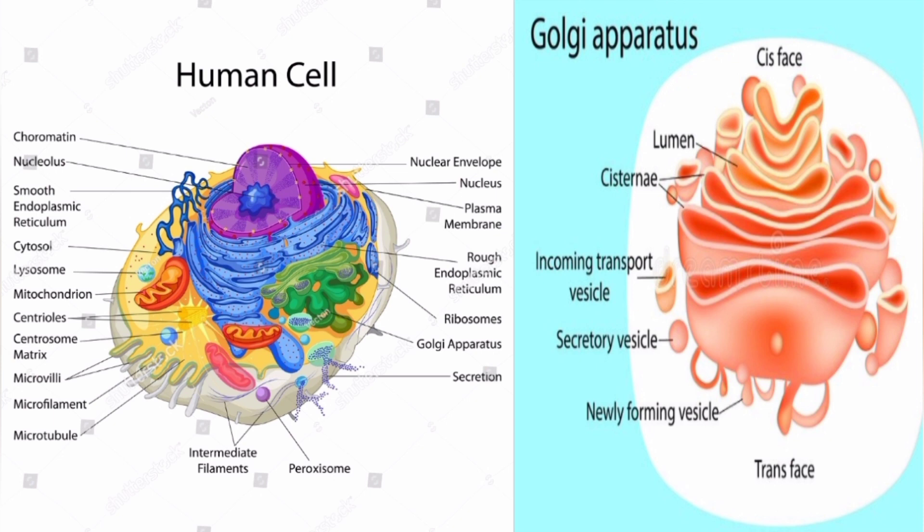The blue color is the endoplasmic reticulum. The endoplasmic reticulum with ribosomes is the rough endoplasmic reticulum. The left side is the smooth endoplasmic reticulum.